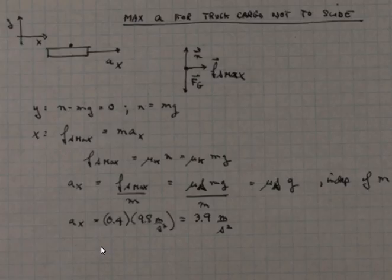So the problem allows us to pick a mu sub s equal to 0.4. And 0.4 times 9.8 gives us 3.9 to 2 sig figs maximum acceleration to the right. Beyond that, we will exceed the maximum frictional force that static friction can provide. And the little m will then begin to slip relative to the cargo bin.